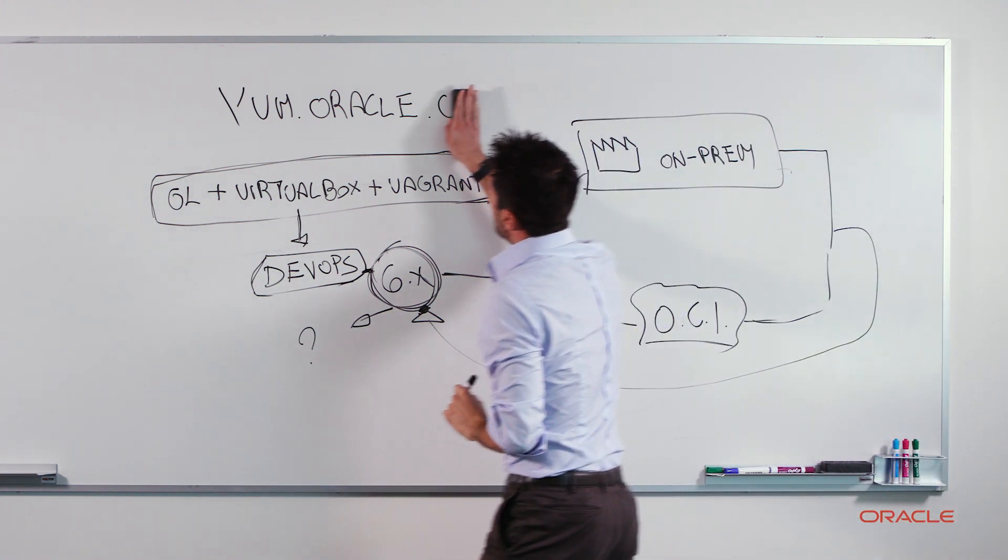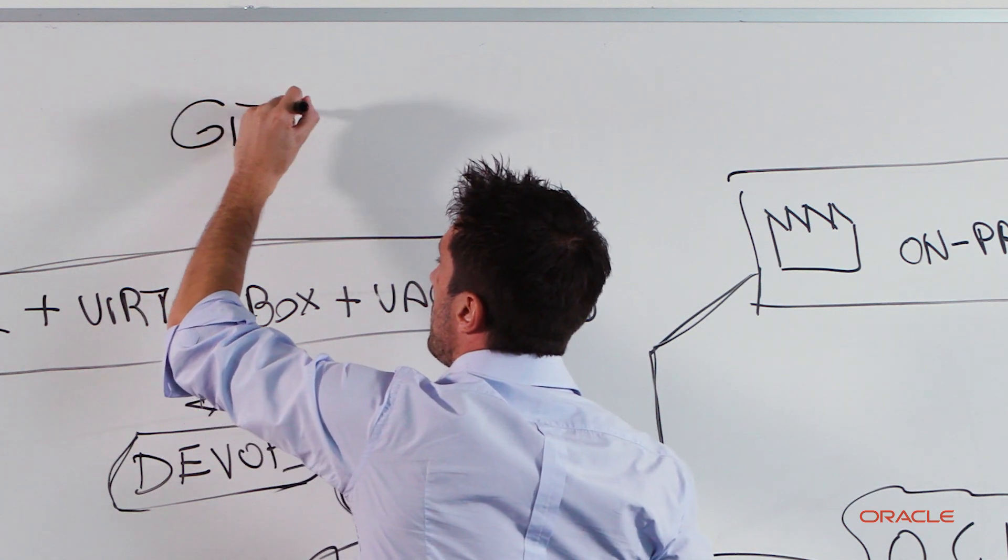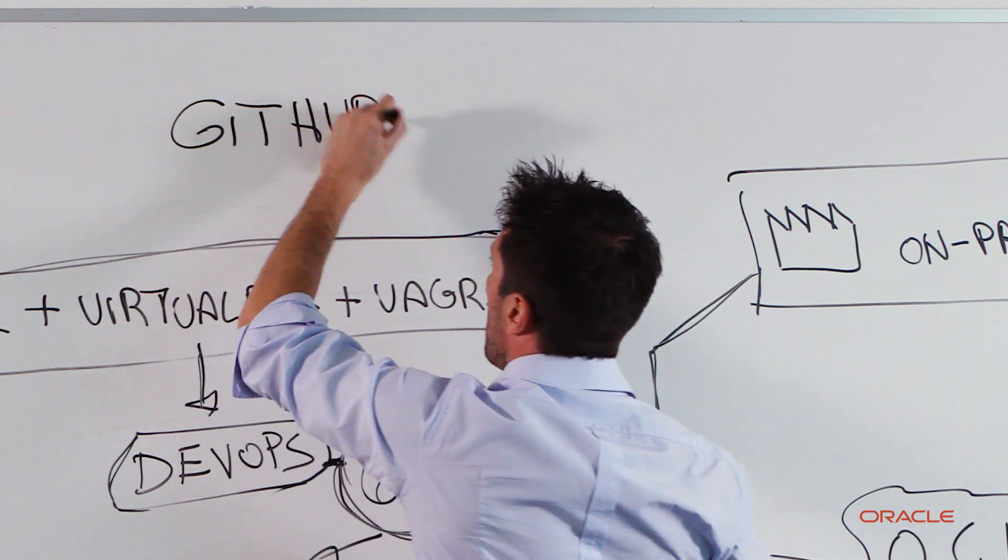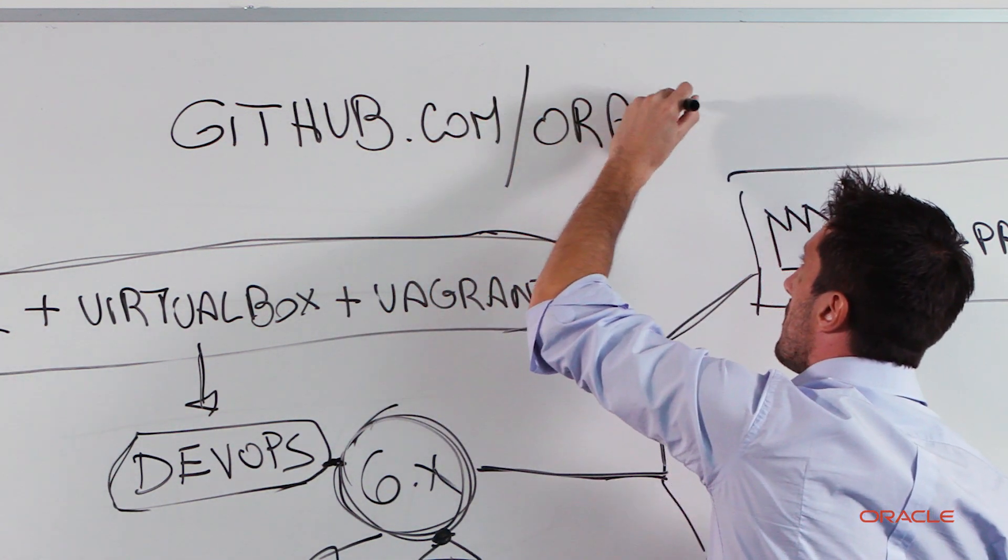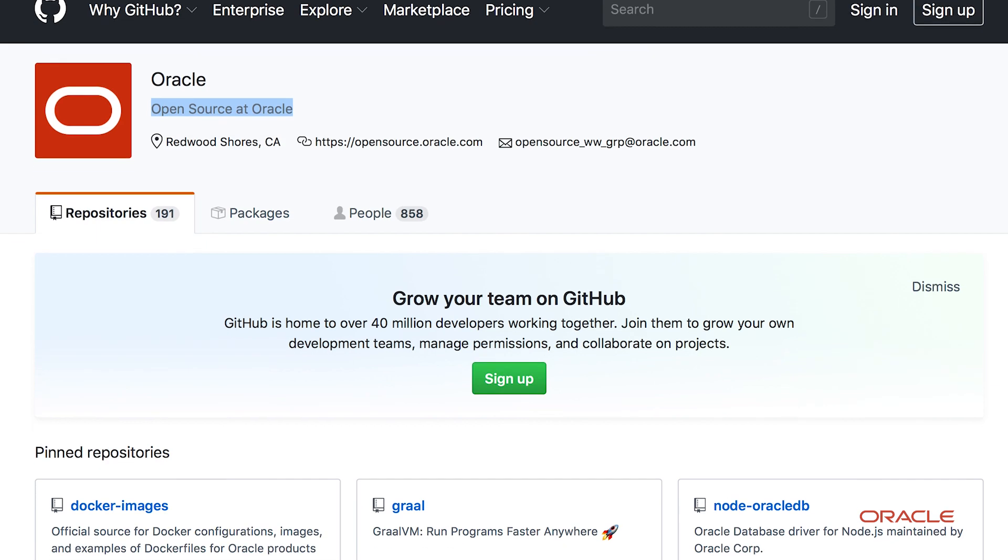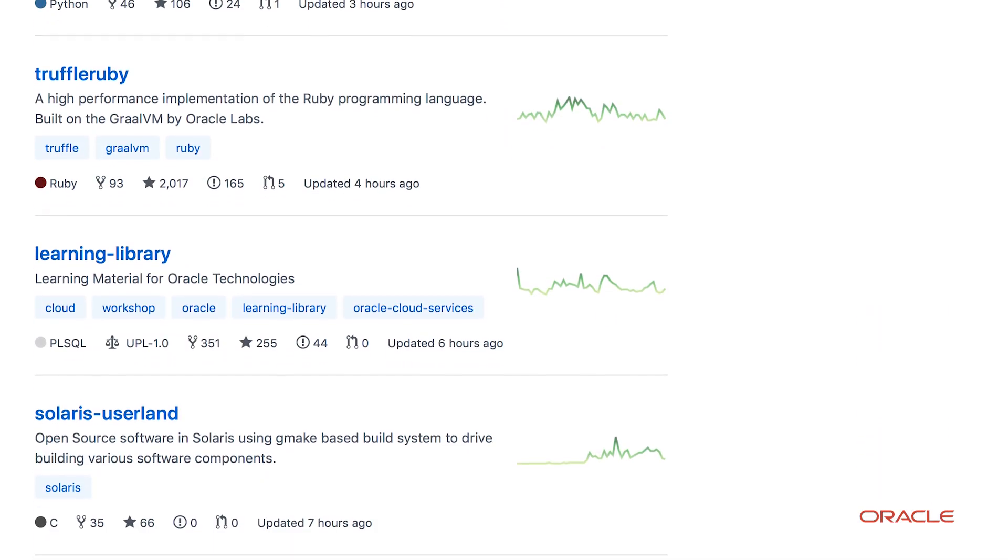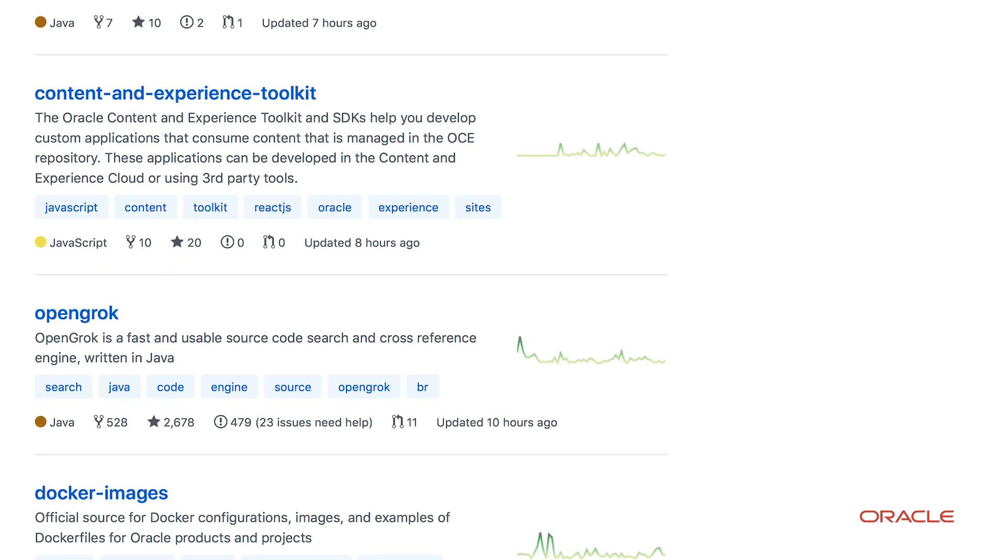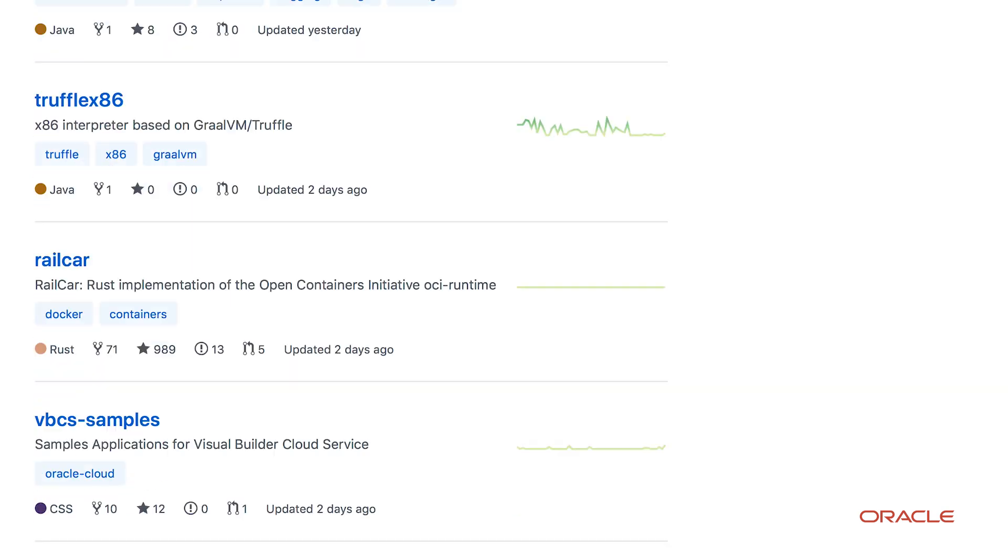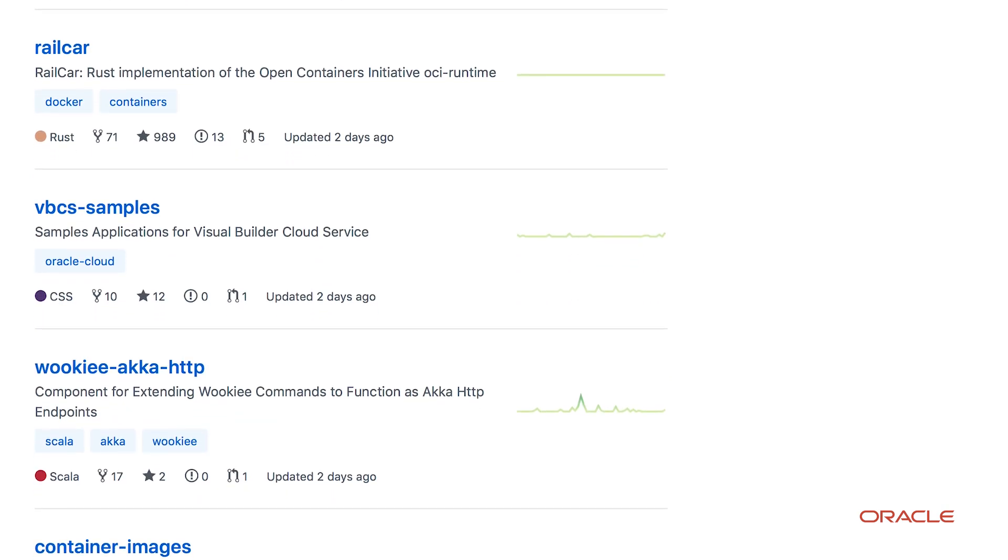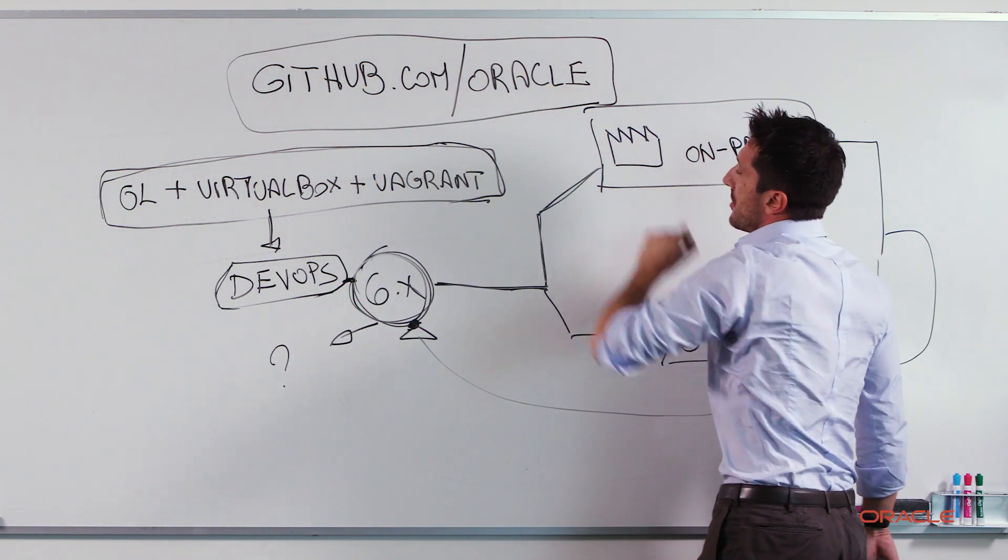For developers, we are also working a lot on GitHub. On GitHub.com slash Oracle, you can find hundreds and hundreds of different open source projects where Oracle is investing a lot. And today, within Oracle, we have more than 1,000 people that is contributing to this kind of project.